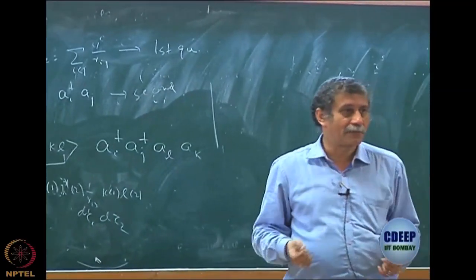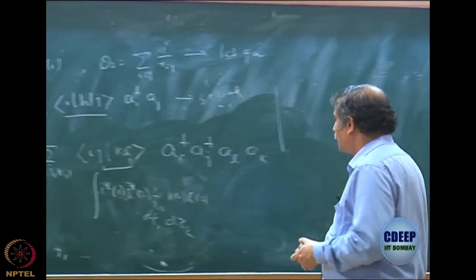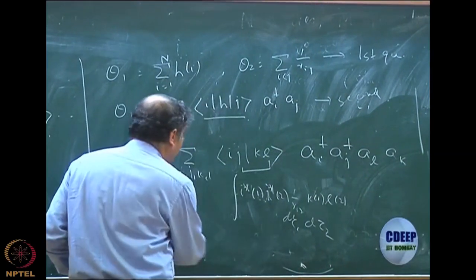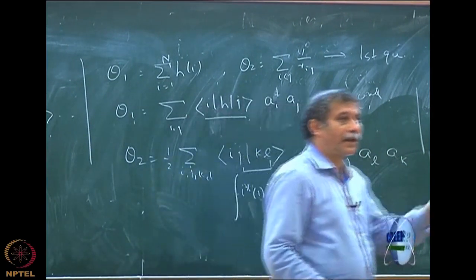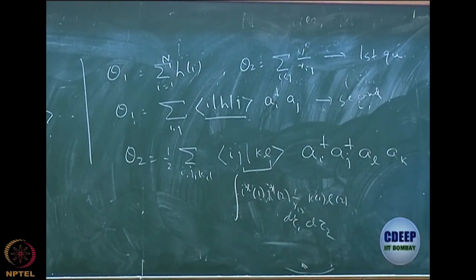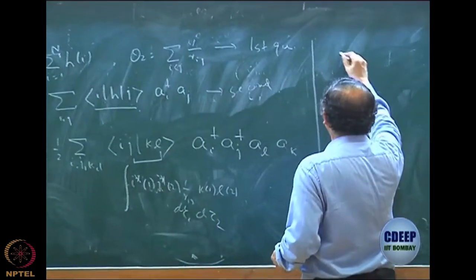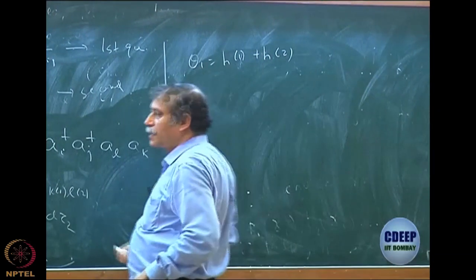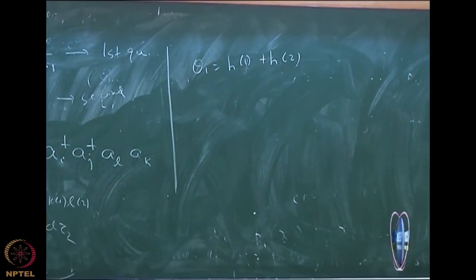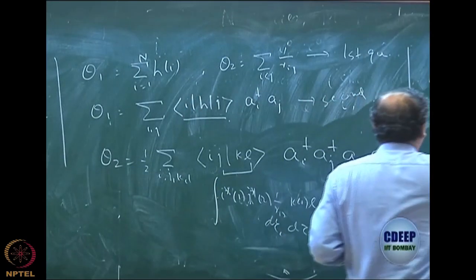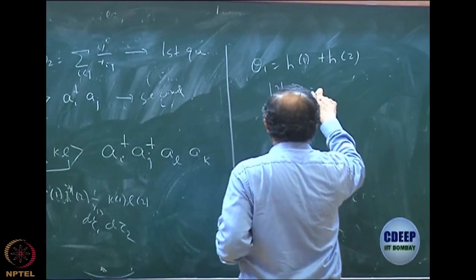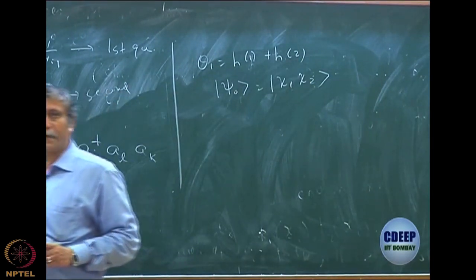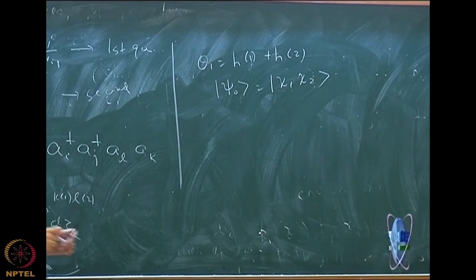Using anti-commutation, we will see how the exchange term comes — the anti-commutation will automatically bring the exchange term because whenever I write ai aj dagger = delta_ij minus ..., it will come. So first thing: let theta1 in first quantization be h(1) plus h(2) — a simple two-electron problem. And you have a given determinant, say psi0 in first quantization is chi1 chi2. Note again: the 1 and 2 in chi1 chi2 are spin orbitals; the 1 and 2 in h(1), h(2) are coordinates. Do not confuse these.